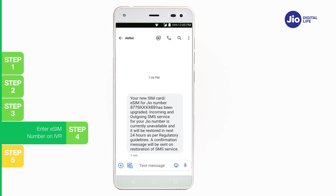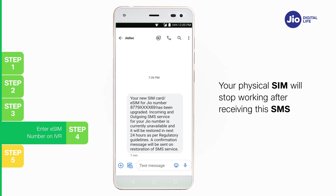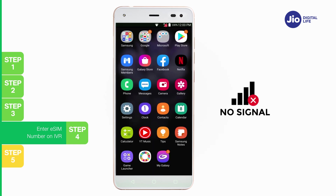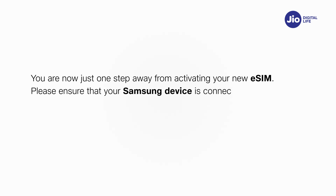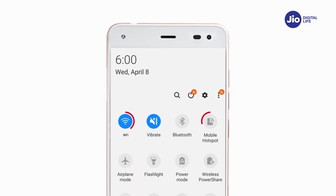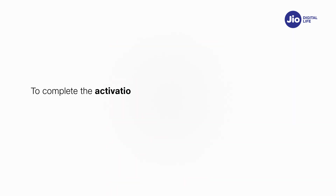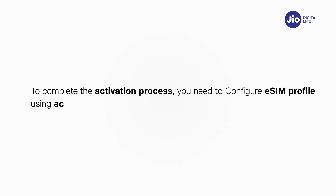As soon as you receive this SMS, your physical SIM will stop working and your phone will show no network. You are now just one step away from activating your new eSIM. Please ensure that your Samsung device is connected to the internet using Wi-Fi or mobile hotspot during this process. To complete the activation process, you need to configure the eSIM profile using the activation code on your Samsung device.